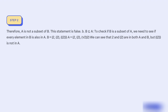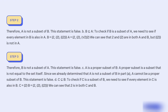To check if B is a subset of A, we need to see if every element in B is also in A. B equals {2, 2, 2} and A equals {2, √2}. We can see that 2 is in both A and B, but there is an element in B that is not in A. Therefore, B is not a subset of A. This statement is false.